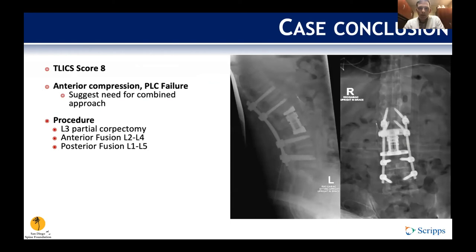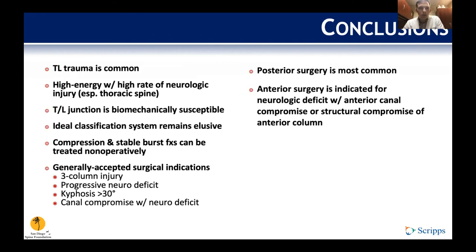Going back to our patient, his TLICS score was 8. He had anterior compression from the retropulsed fragment and failure of his posterior tension band, suggesting a combined anterior and posterior approach. He underwent L3 corpectomy, anterior cage fusion L2 to L4, and posterior instrumentation L1 to L5.